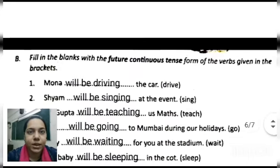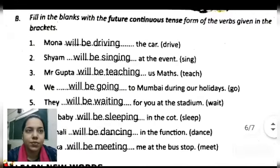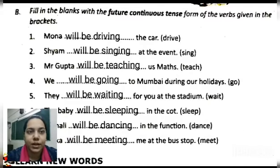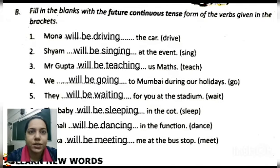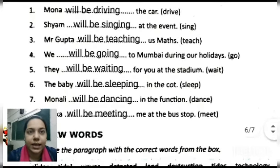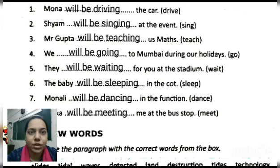Exercise B: Fill in the blanks with the future continuous tense form of the verbs given in brackets. First: Mona — she is singular — so we write 'will be.' Answer: 'Mona will be driving the car.' Second: 'Shyam will be singing at the event.' Shyam is a boy — singular — so we write 'will be,' and with the verb 'sing' we add '-ing,' making 'singing.'